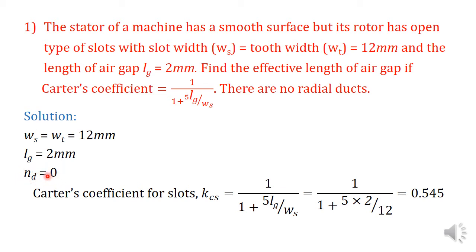We need not consider the case of ventilating ducts. In order to find the effective length of air gap, we have to calculate the gap contraction factor. For finding the gap contraction factor, we have to find the Carter's coefficient for slots, because here there are only slots and no ducts. The Carter's coefficient for slots, as given in the question, is 1 by (1 plus 5 LG by WS), which equals 0.545.